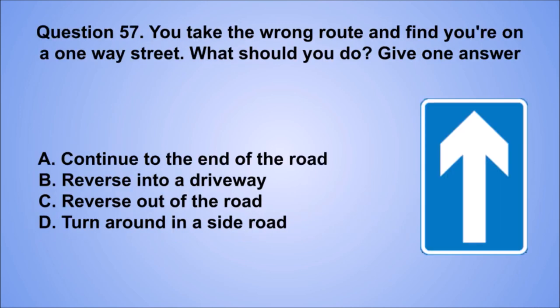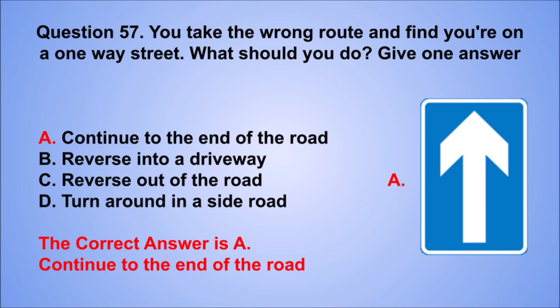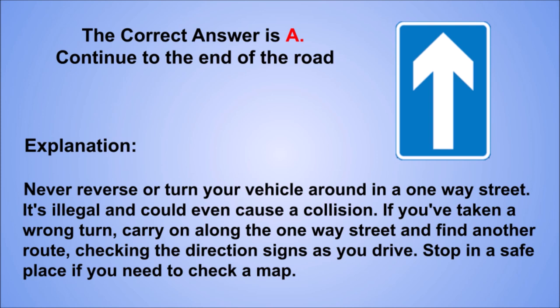Question 57. You take the wrong route and find you're on a one-way street. What should you do? Give one answer. A. Continue to the end of the road. B. Reverse into a driveway. C. Reverse out of the road. D. Turn around in a side road. The correct answer is A, continue to the end of the road. Never reverse or turn your vehicle around in a one-way street. It's illegal and could even cause a collision. If you've taken a wrong turn, carry on along the one-way street and find another route, checking the direction signs as you drive. Stop in a safe place if you need to check a map.